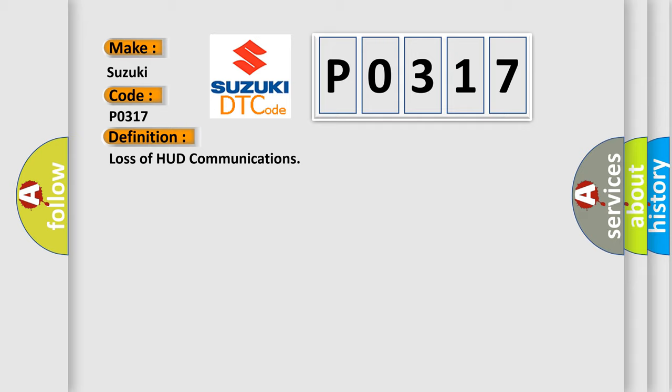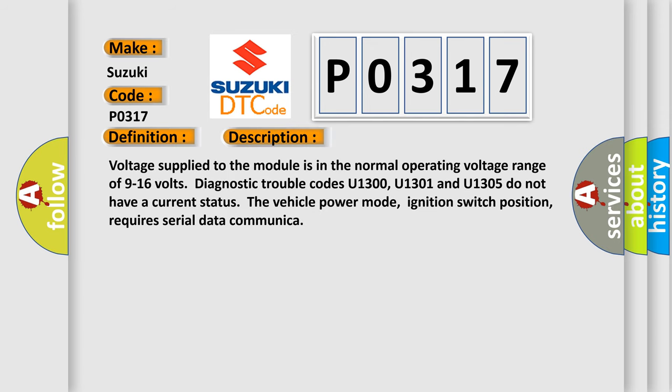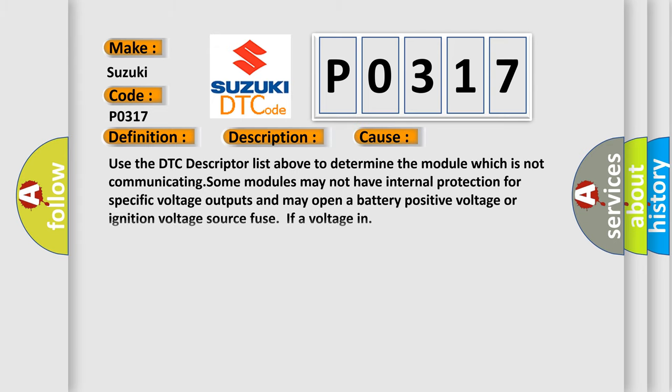Here is a short description of this DTC code. Voltage supplied to the module is in the normal operating voltage range of 9 to 16 volts. Diagnostic trouble codes U1300, U1301, and U1305 do not have a current status. The vehicle power mode and ignition switch position requires serial data communication. This diagnostic error occurs most often in these cases. Use the DTC descriptor list to determine the module which is not communicating. Some modules may not have internal protection for specific voltage outputs and may open a battery positive voltage or ignition voltage source fuse.